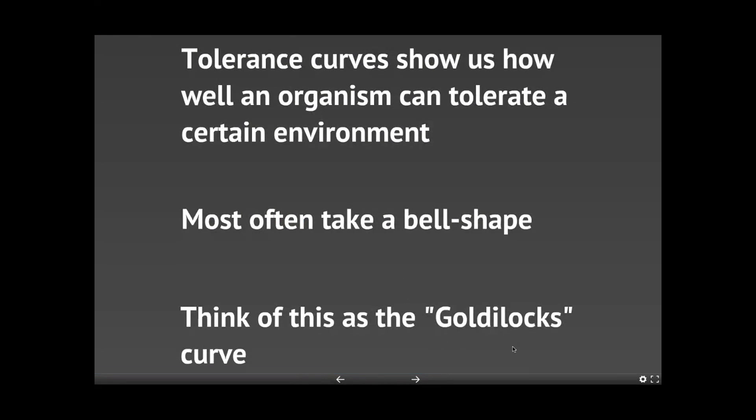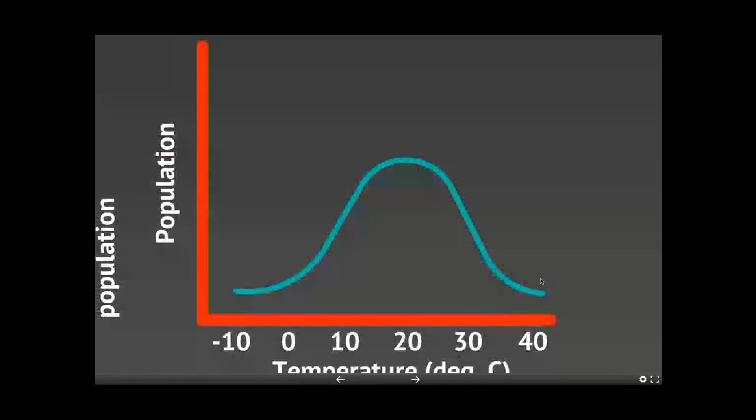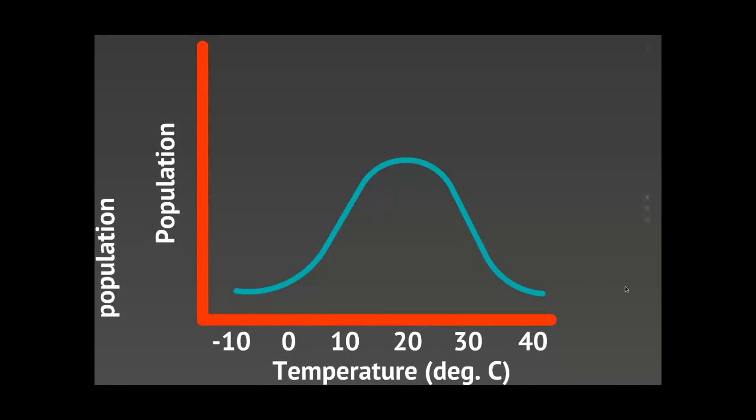And I like to think of it like the Goldilocks curve. If you think about the story Goldilocks and the three bears, you can think about this temperature graph right here as a perfect example or perfect analogy to that. In these areas over here it's too cold for the population to grow. That's why the population dips down really low and maybe even hits zero. And then over here it's too hot for this species to grow. So the population dips down to zero. But right here at 20 degrees that's where it's just right.